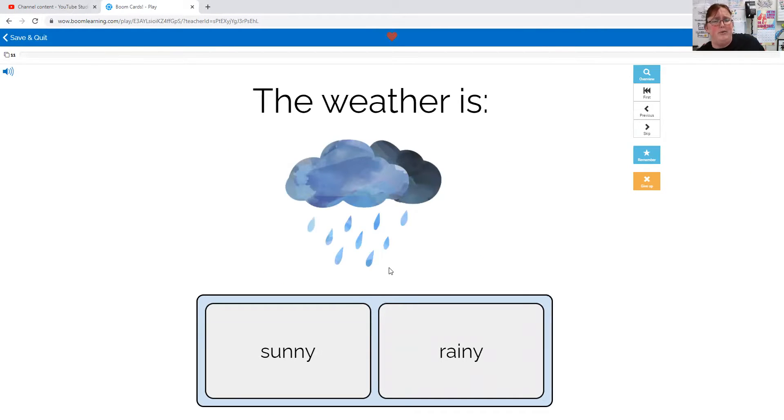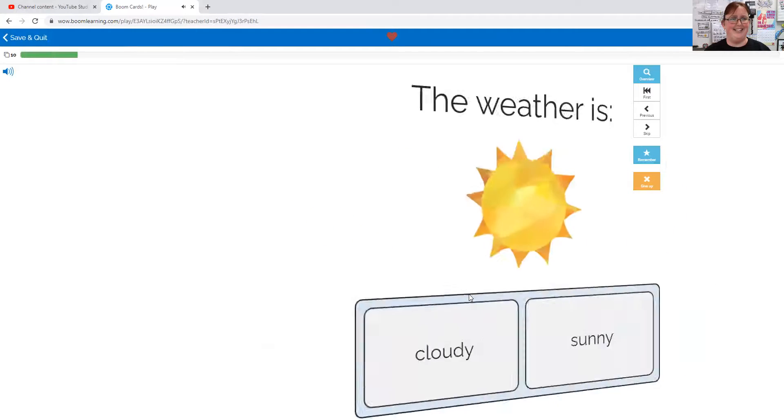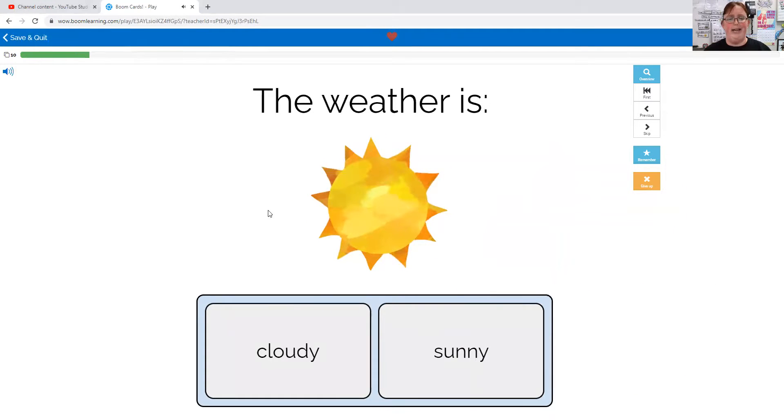Okay, the weather in this picture, the weather is sunny or rainy. You're right, it's rainy. The weather is cloudy or sunny. I don't see any clouds, it's sunny.